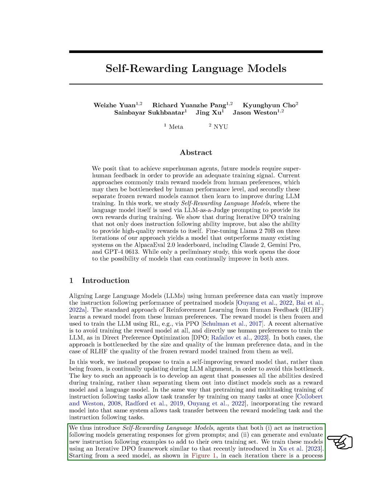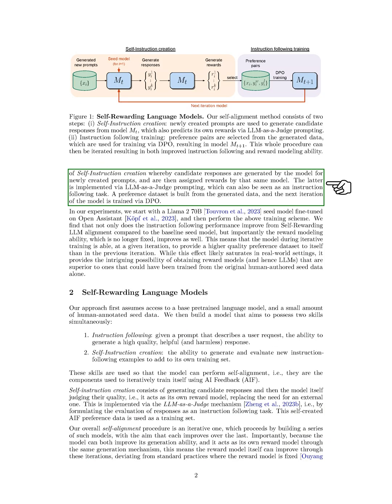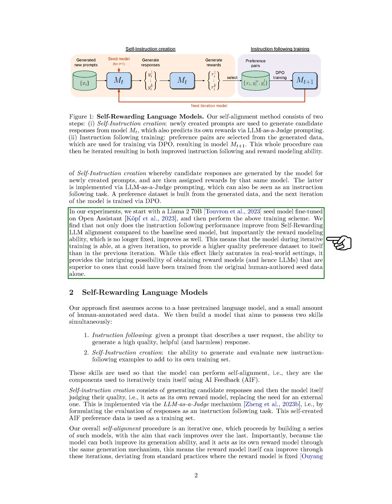We train these models using an iterative DPO framework. The process starts with a seed model. In each iteration, the model generates candidate responses for new prompts and assigns rewards to them. This process is known as self-instruction creation. A preference dataset is built from the generated data, and the next iteration of the model is trained via DPO. Our experiments show that the instruction following performance improves with self-rewarding LLM alignment compared to the baseline seed model. More importantly, the reward modeling ability, which is no longer fixed, also improves. This means that the model can provide a higher quality preference dataset to itself in each iteration, opening up the possibility of obtaining reward models, and hence LLMs, that are superior to those trained from the original human-authored seed data alone.